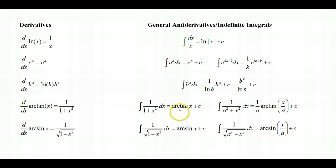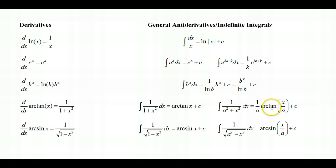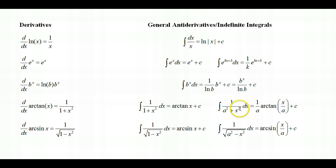While this does come up, what comes up more often is the more general form. If I'm asked to evaluate the integral of 1 over a squared plus x squared dx, the general solution is 1 over a times arctangent of x over a, plus c. I want to keep an eye out for this form — a number squared plus a variable squared — and we'll use u-substitution on something similar in the next few examples.